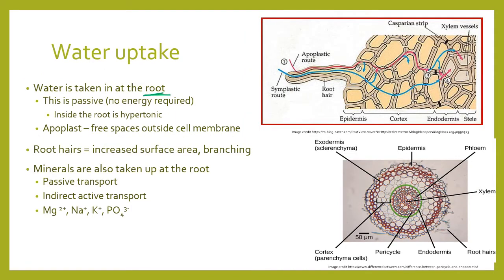Water is taken up always at the root. Plants do not bring water in through their leaves — water uptake happens at the root. It is passive osmosis; no energy is required. The inside of the root is hypertonic, which means the outside of the plant is hypotonic, and so water will move into the root via osmosis with no energy required.